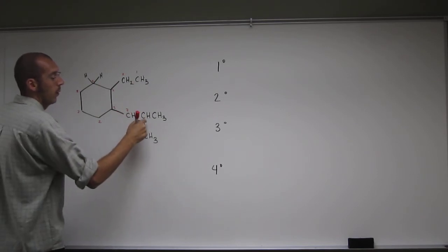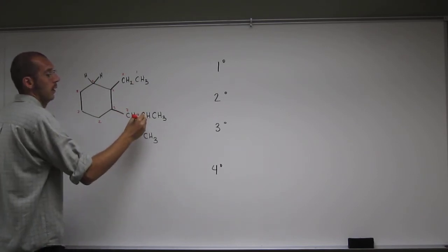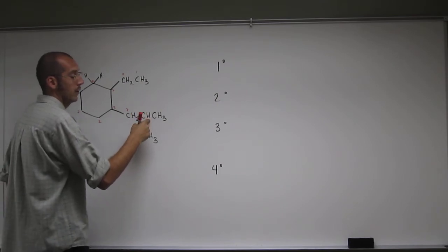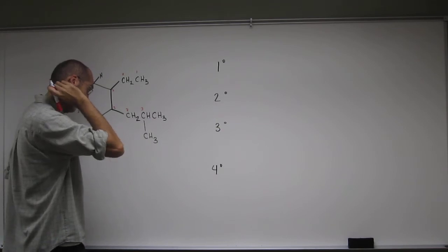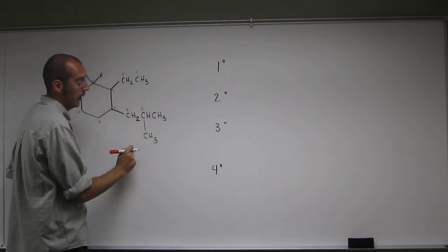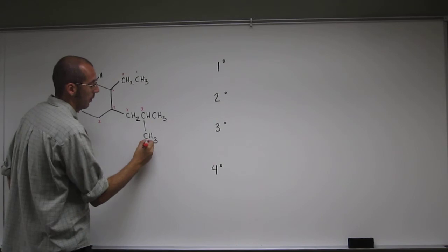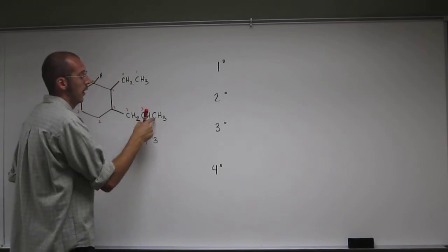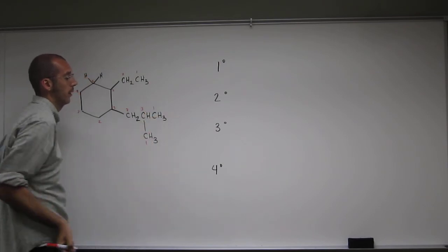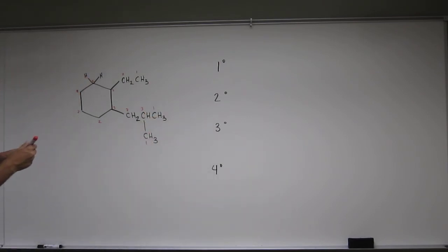Carbon bonded to one hydrogen. So one hydrogen, that's going to be a tertiary carbon. Here's a carbon bonded to three hydrogens, so that's going to be a primary carbon because it's only bonded to the one other carbon. And this carbon is also a primary carbon for the same reason.